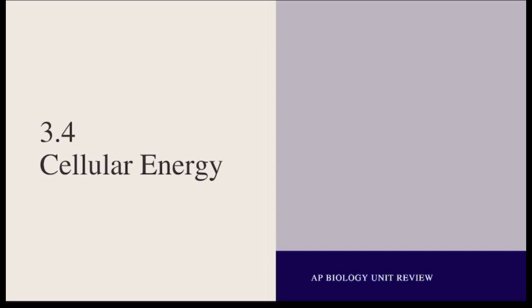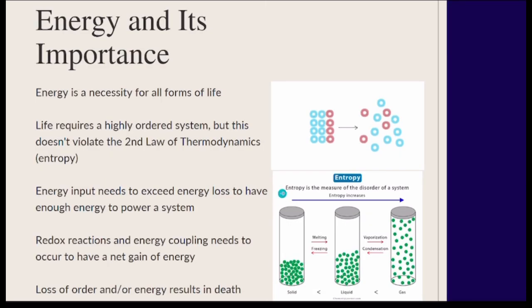Topic 3.4 is cellular energy. Energy is really important to life, and life does require order to happen — but this doesn't violate the second law of thermodynamics and entropy. In order to have net energy, you have to gain more than you lose. This is possible because of redox reactions and energy coupling, referring to endergonic and exergonic reactions. A total loss of order or energy results in death.